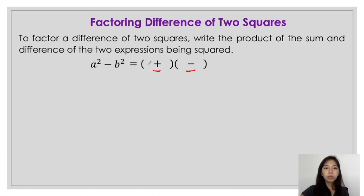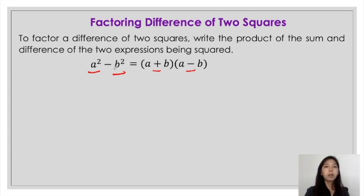What terms would be placed in each quantity? After setting up the product of the sum and difference, you have to get the square roots of each term. The square root of the first term, a squared, is a — placed as the first term in both quantities. The square root of the second term, b squared, is b — placed as the second term in each quantity.